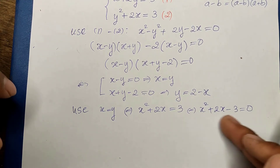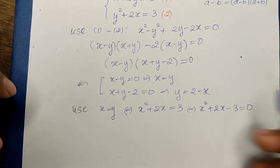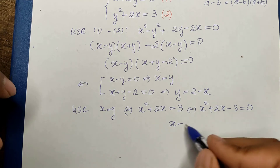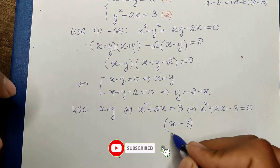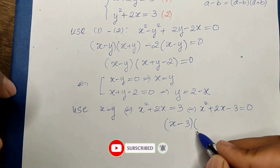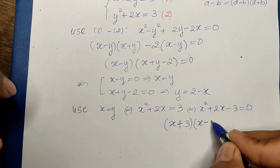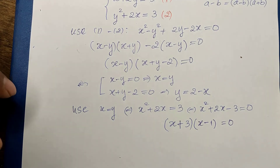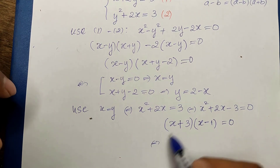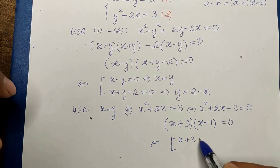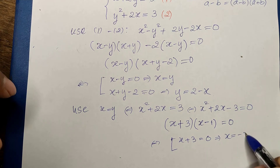We can factor this into two factors: (x plus 3) times (x minus 1) equals zero. So either x plus 3 equals zero giving x equals minus 3, or x minus 1 equals zero giving x equals 1.